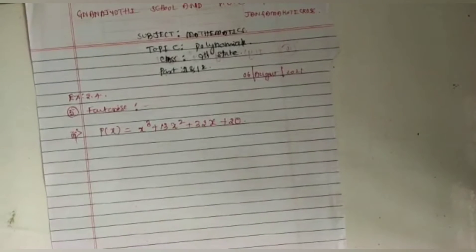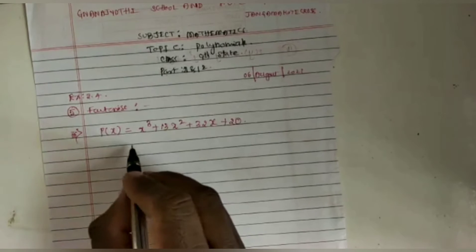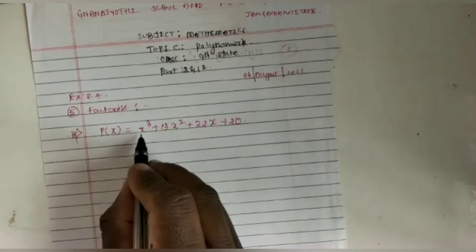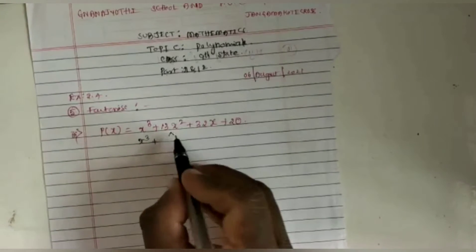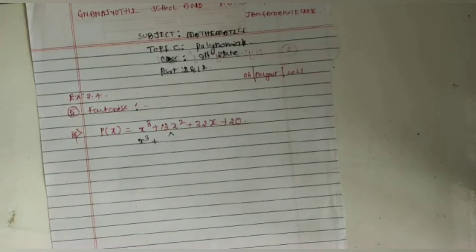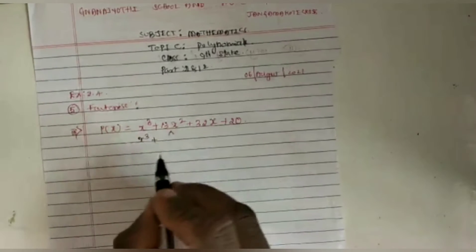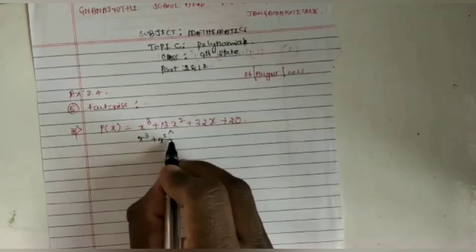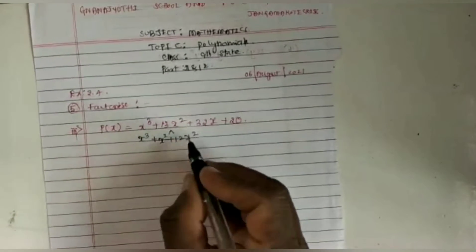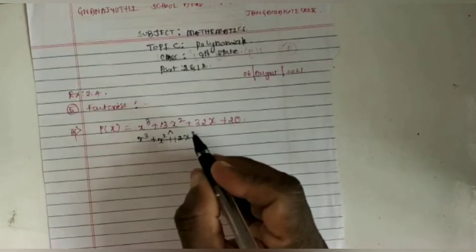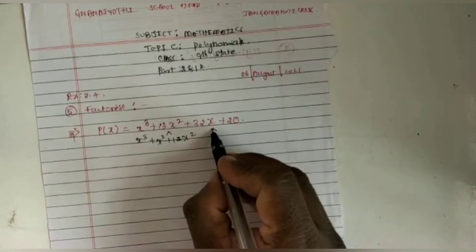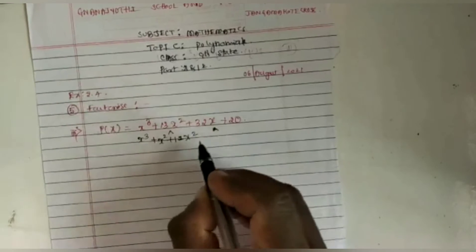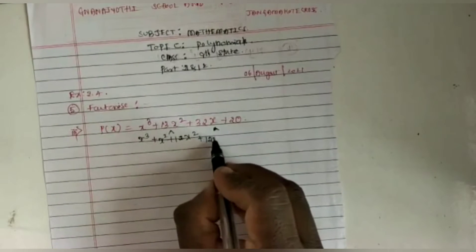We need to factorize these terms. I am going to take x³ plus 13x by splitting the middle term. We take this as x² plus 12x². Again, I am going to split 32 into two terms, so that is 12x.